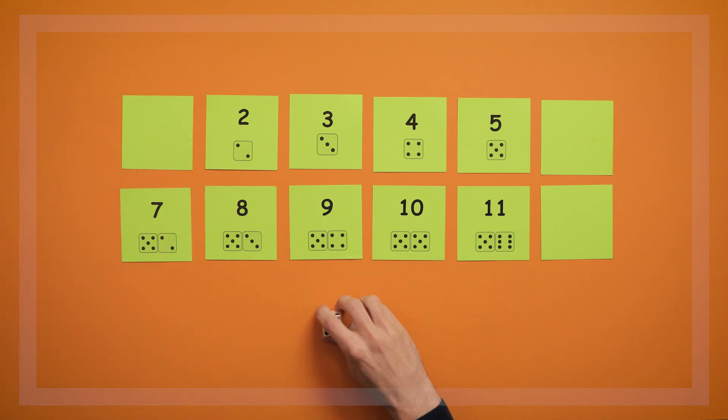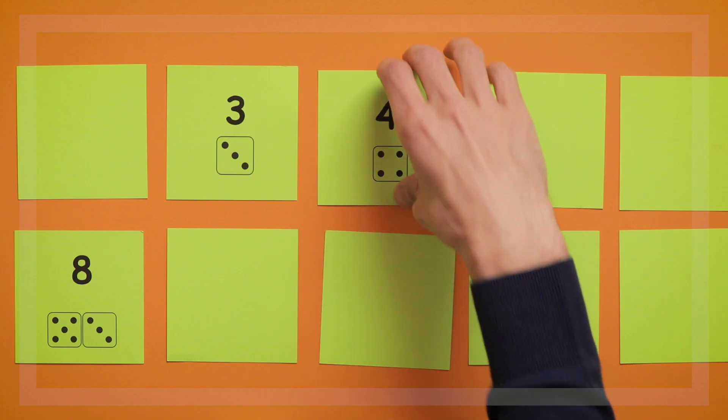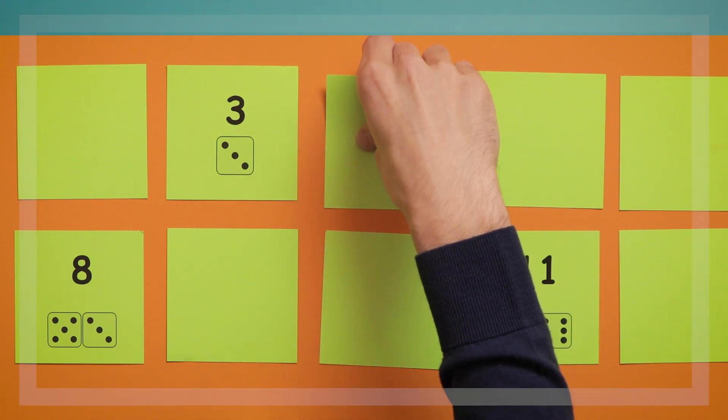Later, if children are ready, they can also use subtraction to find the difference between the two numbers. In this version of Roll 2, we'll use two regular 1-6 dice and the 1-12 cards.